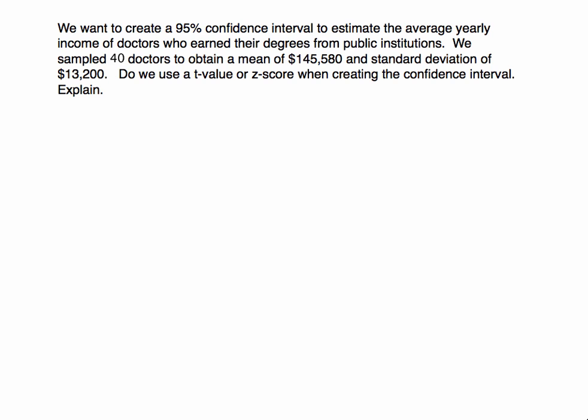In this example we want to create a 95% confidence interval to estimate the average yearly income of doctors. We sampled 40 doctors, and we have a mean of 145,580 and a standard deviation of 13,200. We need to determine whether we're going to get a t-value or use a z-score like we did in previous problems when we estimated the population proportion.